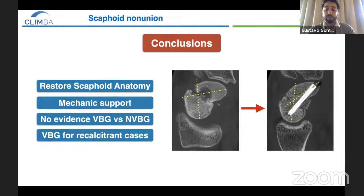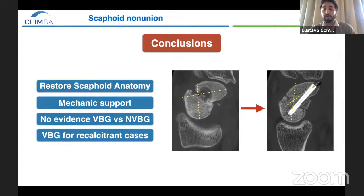In conclusions: we must always restore scaphoid anatomy and give mechanical support. There is no real evidence that a vascularized bone graft is better than a non-vascularized bone graft, but we should reserve vascularized bone graft for cases with recalcitrant non-union.